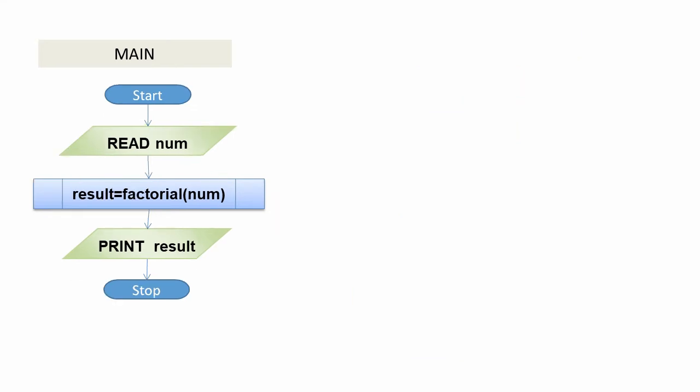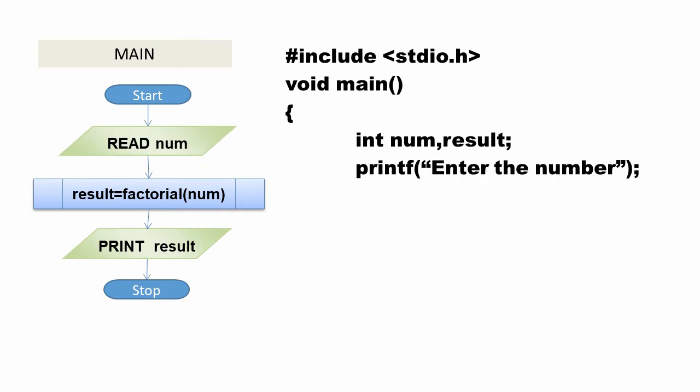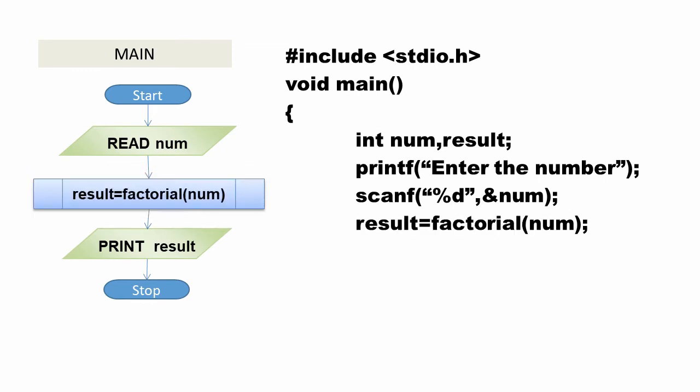Now let us write the code for main function. #include <stdio.h>, void main(), open curly brace, declare variable num and result: int num, result. Read the value of num: printf "Enter number", scanf("%d", &num). Now call function factorial: result = factorial(num). Print result: printf("Factorial is %d", result), close curly brace.